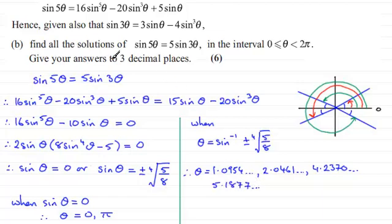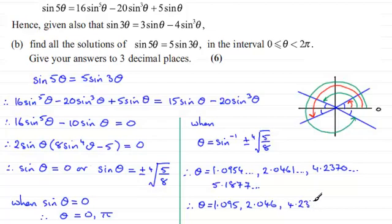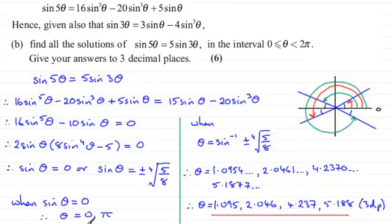Rounding to three decimal places, θ equals 1.095, 2.046, 4.237, and 5.188 radians. Together with the earlier solutions θ = 0 and θ = π, those are all the solutions in the interval.